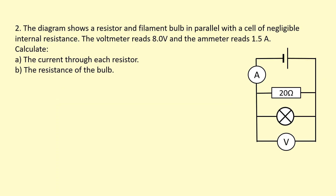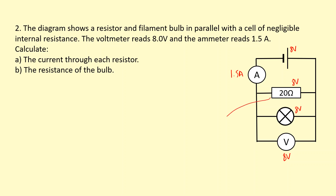The diagram shows a resistor and a filament bulb in parallel with a cell of negligible internal resistance. The voltmeter reads 8 volts and the ammeter reads 1.5 amps. The task is to calculate the current through each resistor and the resistance of the bulb. Because this is 8 volts, we know this has to be 8 volts, this has to be 8 volts, and this has to be 8 volts, because they're all in parallel with each other. We can see straight away that we know two things for this resistor, so we can work out the current through it.